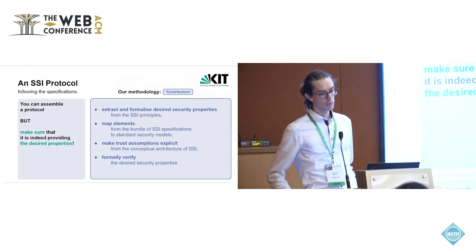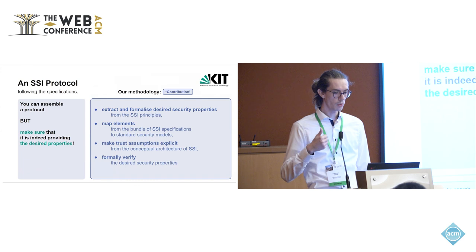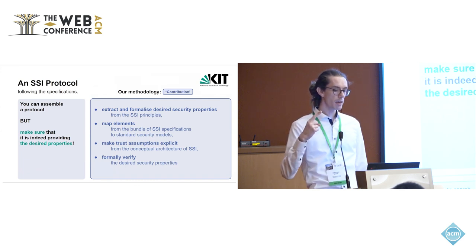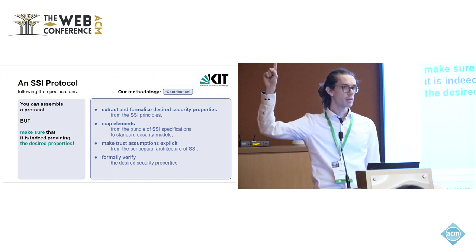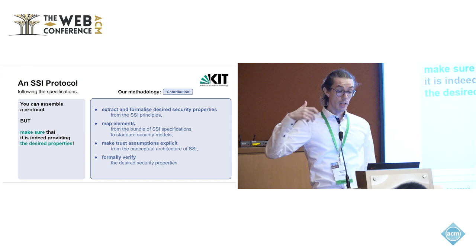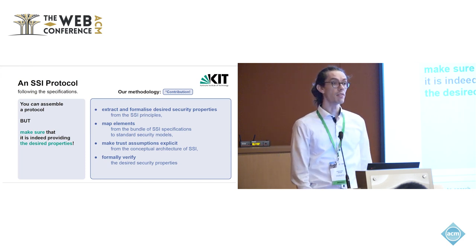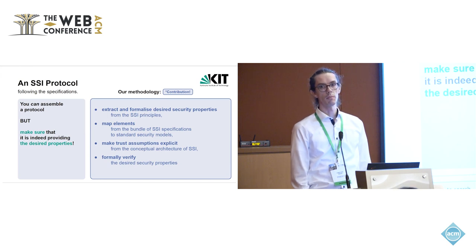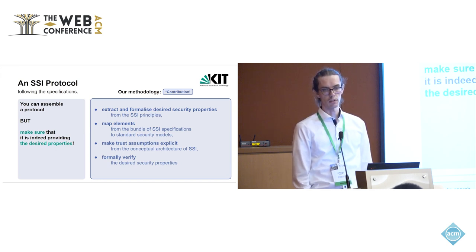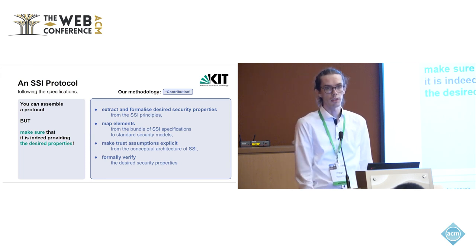This is where our methodology comes in. First, we need to know what security properties we want — we extract and formalize them from the SSI principles. We then map elements from the specifications to a symbolic model of the protocol. We make our trust assumptions explicit based on the conceptual architecture of SSI, and then we apply formal methods to verify the security properties. There is a lot of legwork to be done to apply the formal methods.